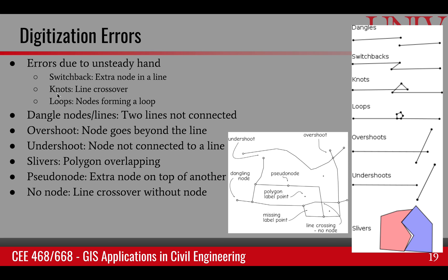Another type is a knot, where in the digitization process you go up, come back down, and continue, creating a crossover point with no node — just a crossing. If there is a node at the crossing, it becomes a loop. Both errors must be fixed afterwards through manual shifting of points.